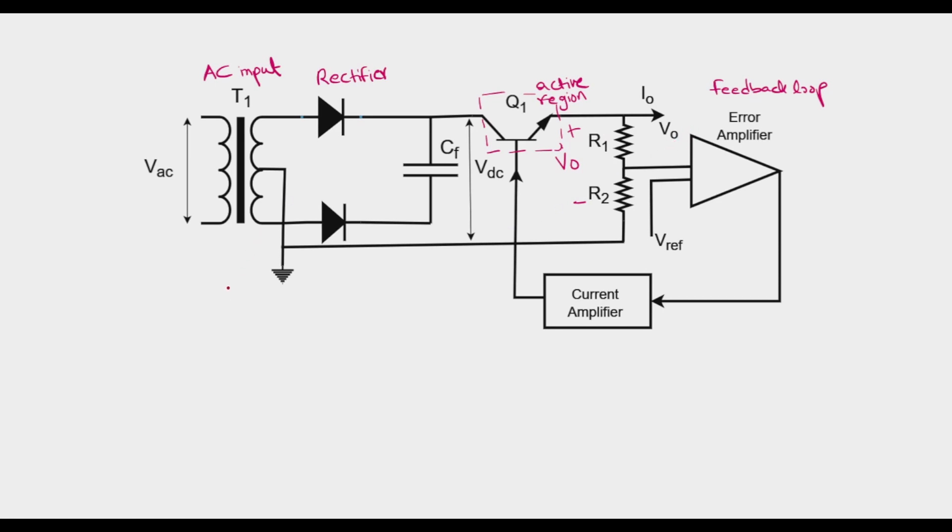So let's see how the feedback loop works, the operating principle. A part of the output voltage is sensed here and is given as the input to the error amplifier. This voltage at the input of the error amplifier is V0 times R2 over R1 plus R2, since we have a divider here and we are sensing a part of this voltage.